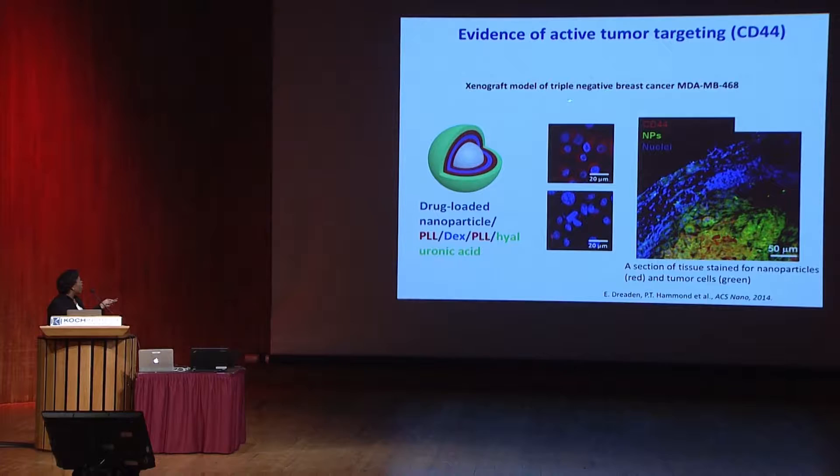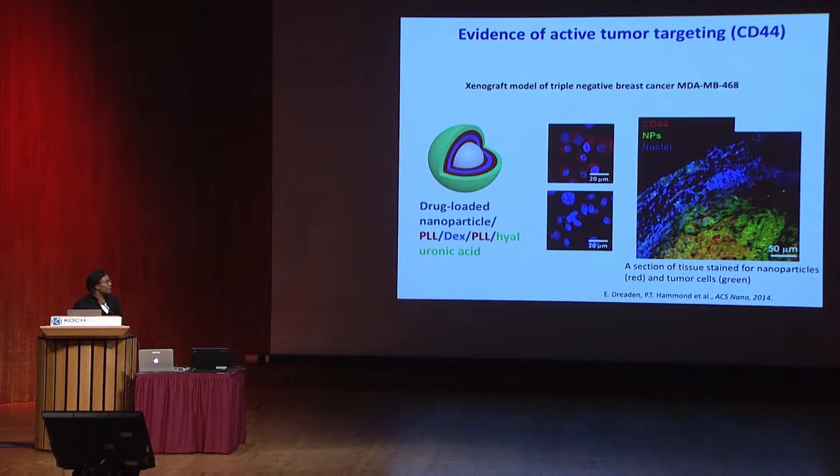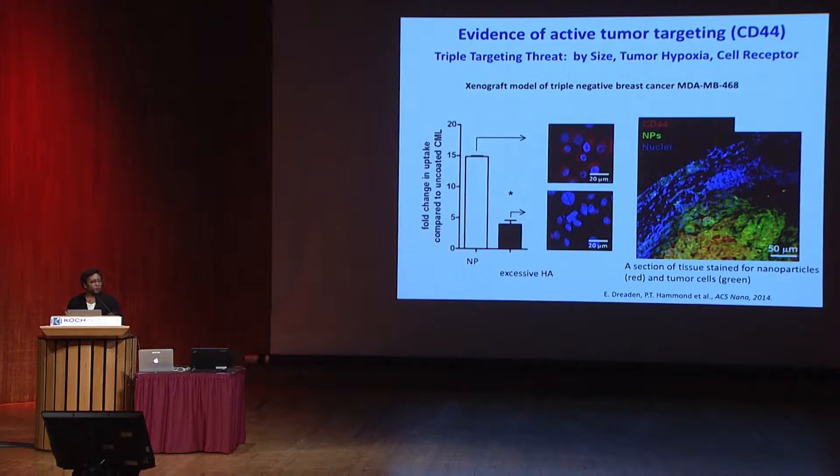Because tumor cells often overexpress certain receptors, we can decorate our nanoparticle with a ligand that binds that receptor and enables endocytic uptake. This is the case for hyaluronic acid, which was the choice for a number of our bilayer nanoparticles. HA is a simple, highly negatively charged carboxylated polysaccharide ubiquitous in the extracellular matrix. It engages the CD44 receptor, which is actually overexpressed in a large number of the cancer types we're interested in.